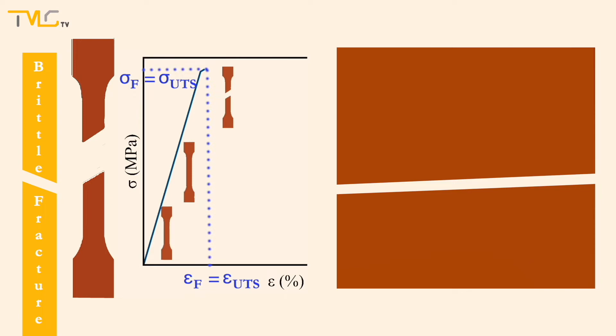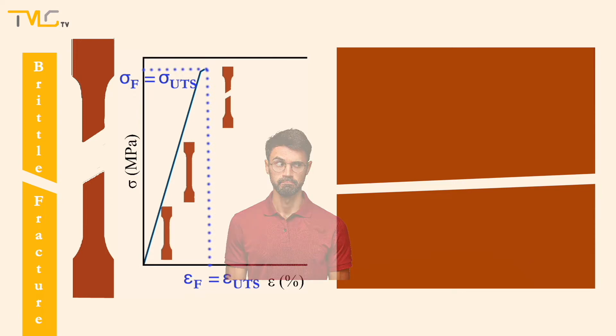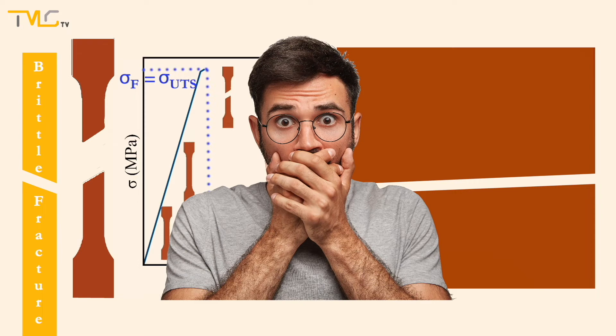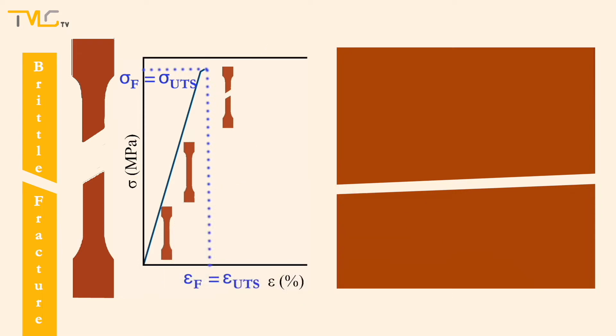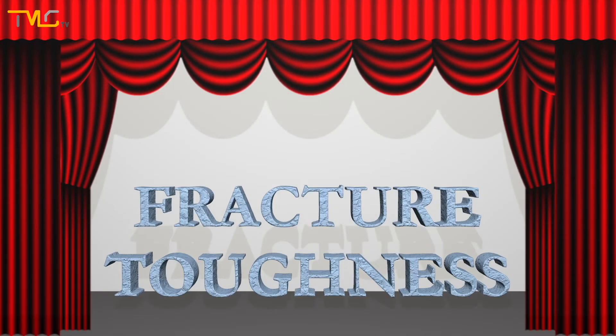As brittle fracture cannot be predicted or observed, brittle fracture is called a catastrophic failure, since the fracture occurs after a rapid crack propagation. Now, with the scene set, we can go back to our second focal point, fracture toughness.